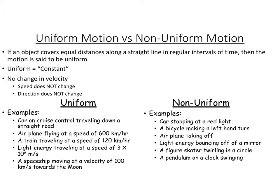We've talked about uniform motion versus non-uniform motion. If the object is covering equal distances along a straight line in regular intervals of time, then that's said to be uniform motion, meaning it's a constant velocity. It's not changing. The speed's not changing. The direction's not changing. Everything's staying the same.